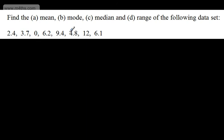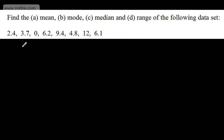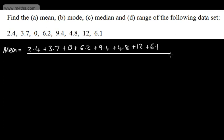So I'm going to include it and include it in the number of data items that we got. So this time, the wording has changed slightly. We're asked to find the mean of the data set. So let's go ahead and calculate this. The mean, we're going to have 2.4 plus 3.7 plus the 0 plus the 6.2 plus the 9.4 plus the 4.8 plus the 12 plus the 6.1. And we need to divide this by the number of items that we've got. We've got 8 data items.